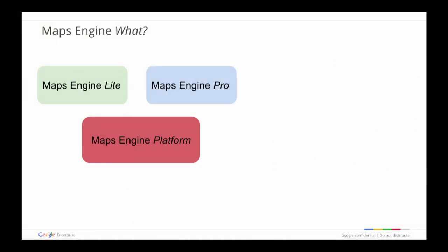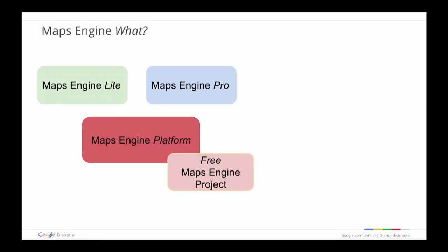Later last year we also launched Maps Engine Pro, kind of between Lite and the platform version. This is a paid product with a per-seat pricing model — ideal for information workers and business professionals to create stylized maps, collaborate with other users, and make informed decisions. There is also a free Maps Engine project, which you can think of as a trial, where individuals sign up using their Google account — the same one used for Gmail and G+. One key takeaway: there is a lot of confusion between Lite and the free version. These are two completely different things. The free trial Maps Engine project gets you access to a Maps Engine platform, whereas the Lite version is a simplified product with far fewer features.